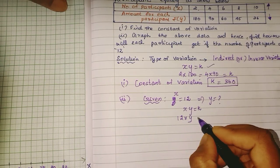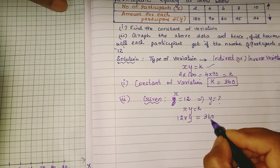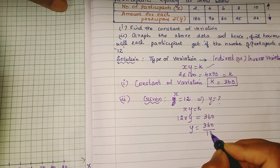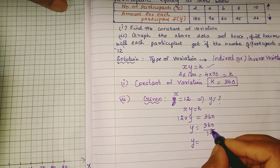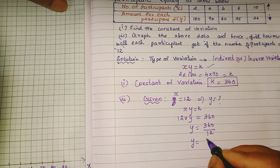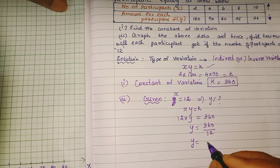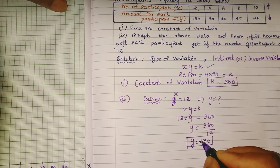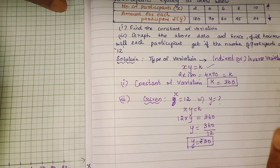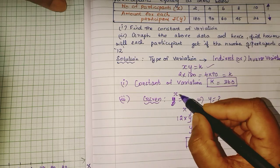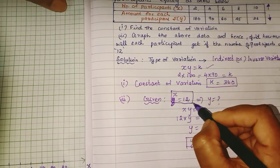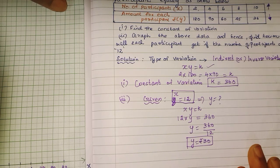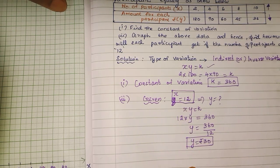y = 360 ÷ 12. y = 30. So each participant will receive 30 rupees when there are 12 participants.